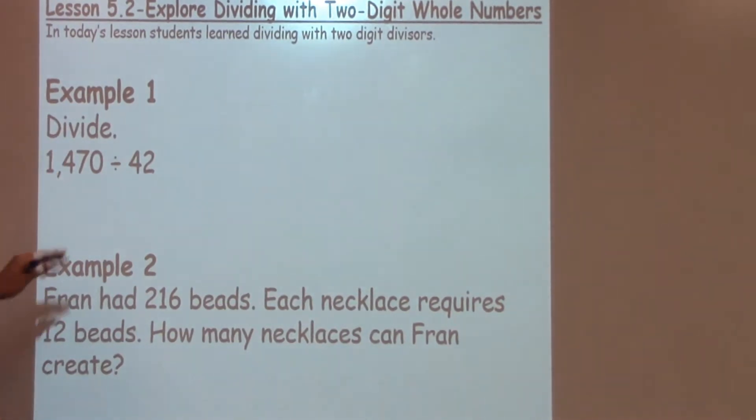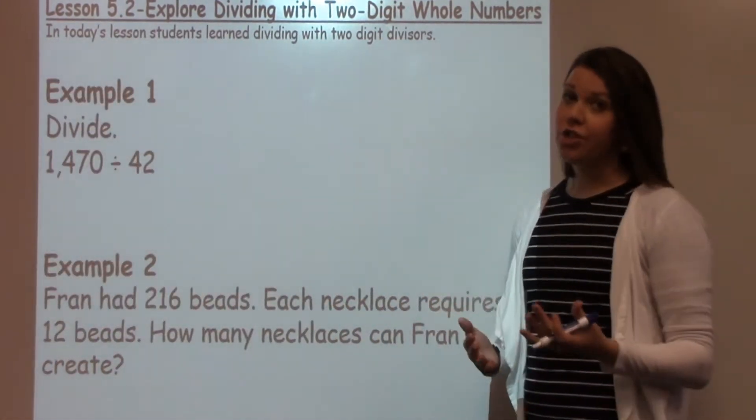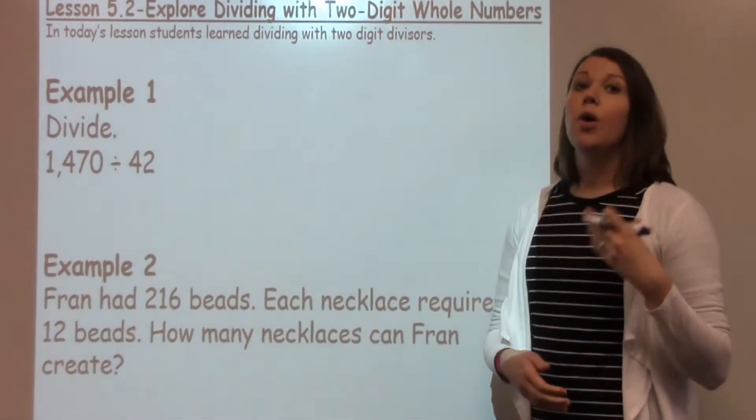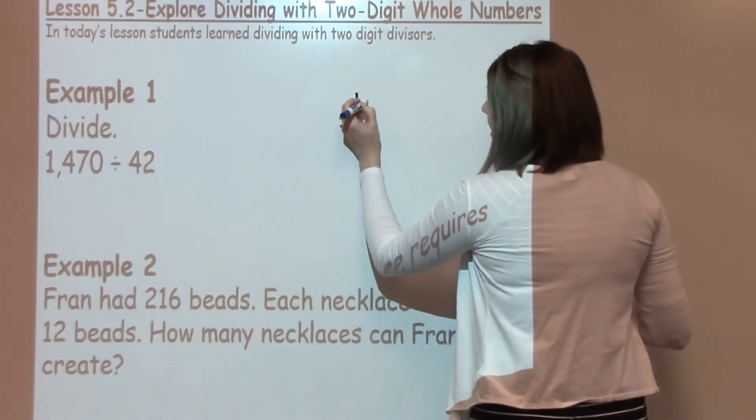For example 1, we have to just divide. We're going to take 1,470 divided by 42. I'm going to do the traditional, or step-by-step, or digit-by-digit algorithm with this one. So I'm going to write down my problem.